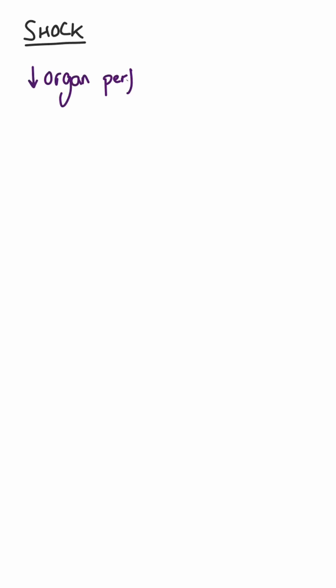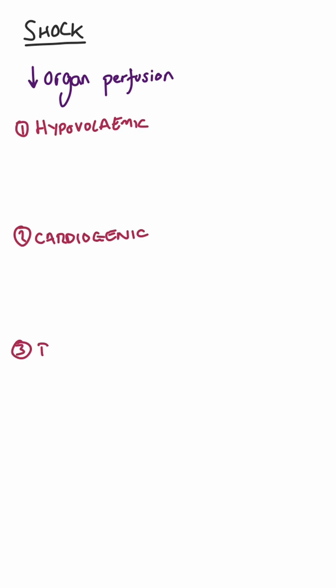Shock means inadequate tissue perfusion. In other words, organs aren't getting enough oxygen. There are four main types of shock: hypovolemic, cardiogenic, distributive, and obstructive.